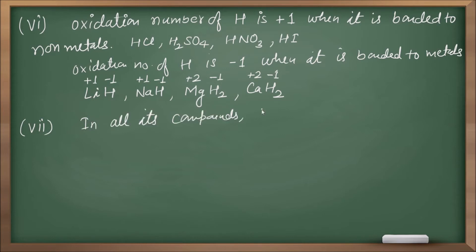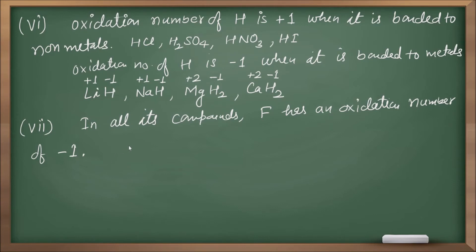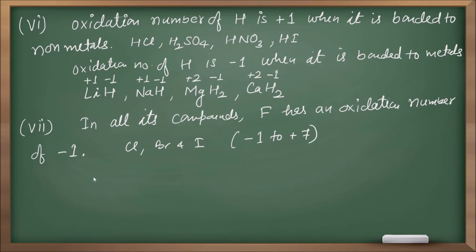Fluorine in all its compounds has an oxidation number of minus one, because it is the most electronegative element. For the other halogens — chlorine, bromine, and iodine — they can have different oxidation numbers ranging from minus one to plus seven. They can show positive oxidation numbers and have a range when combined with oxygen.